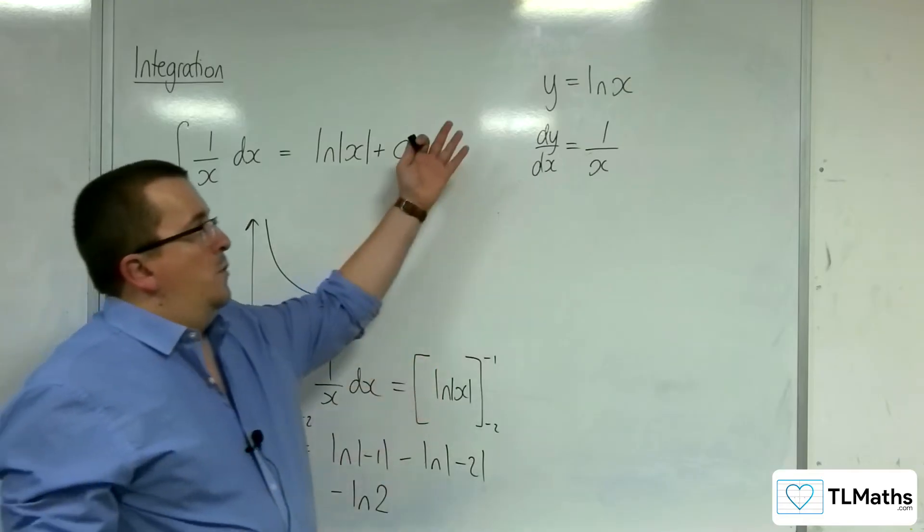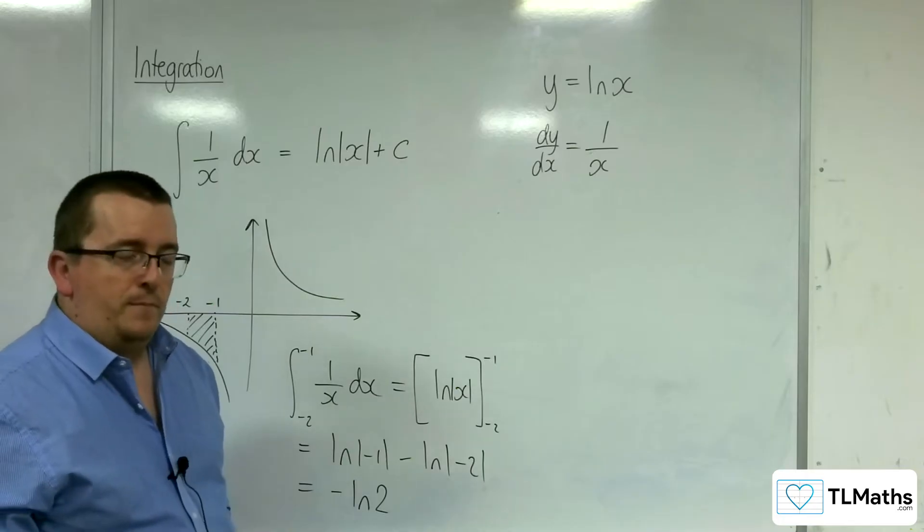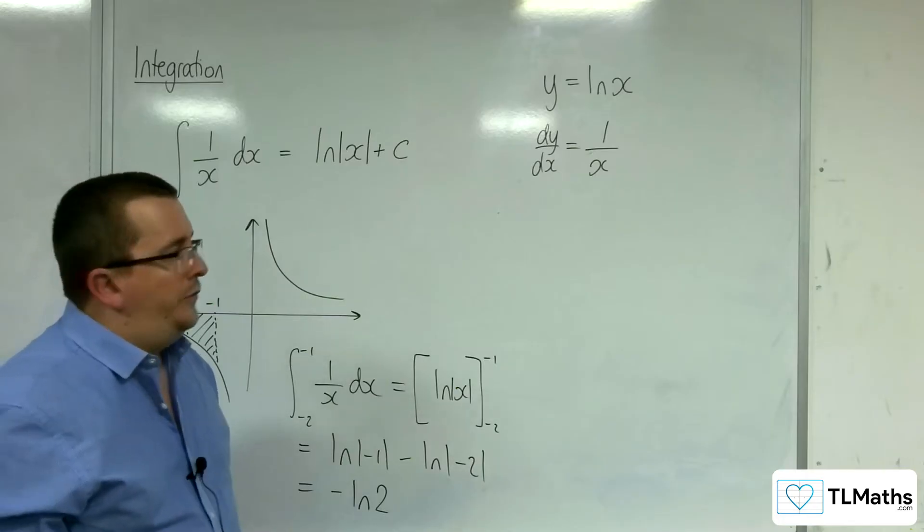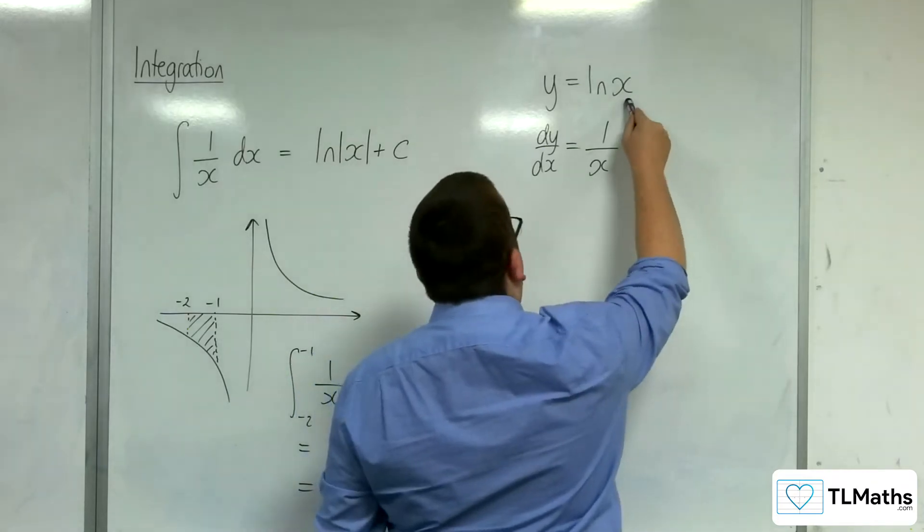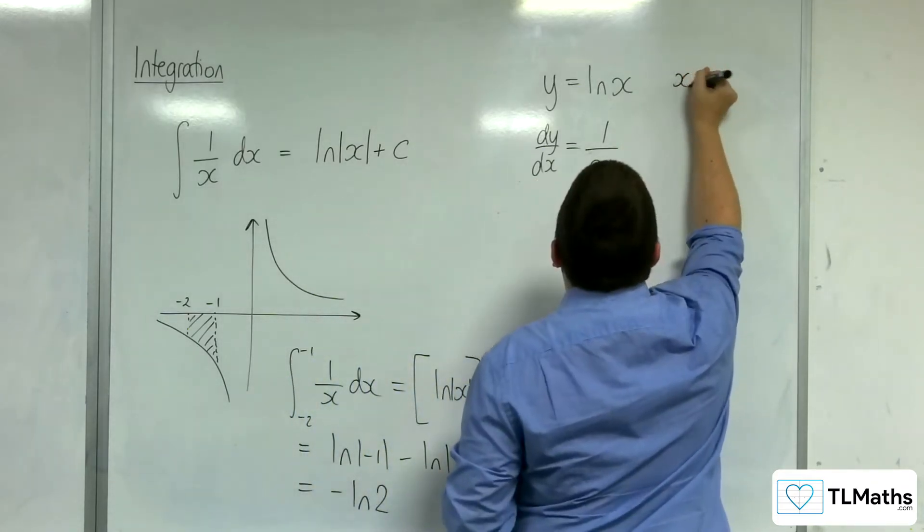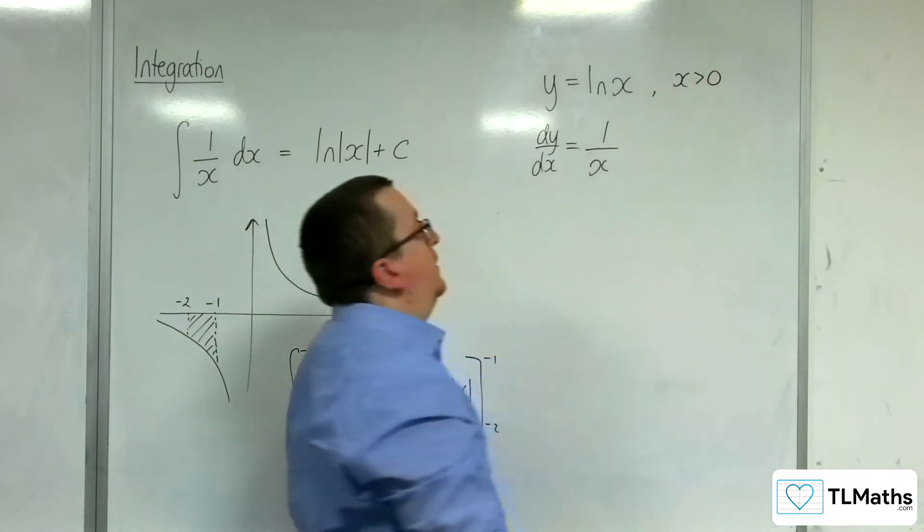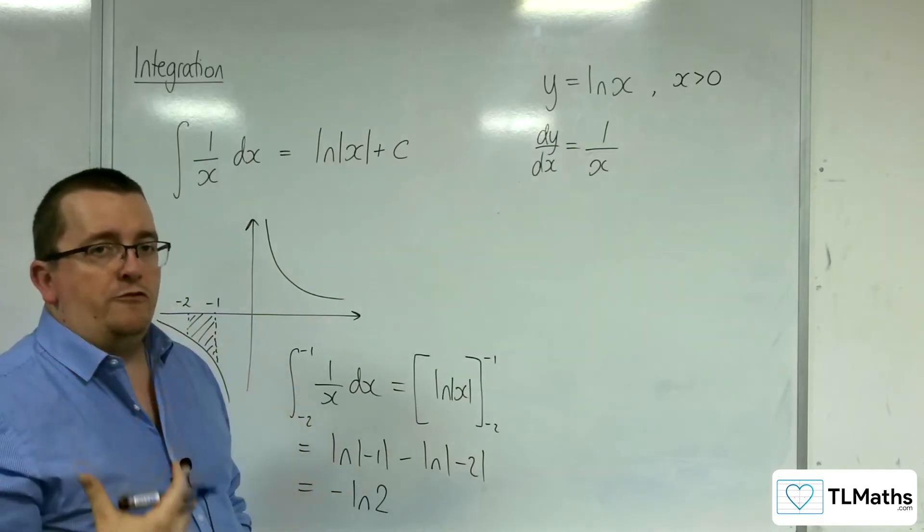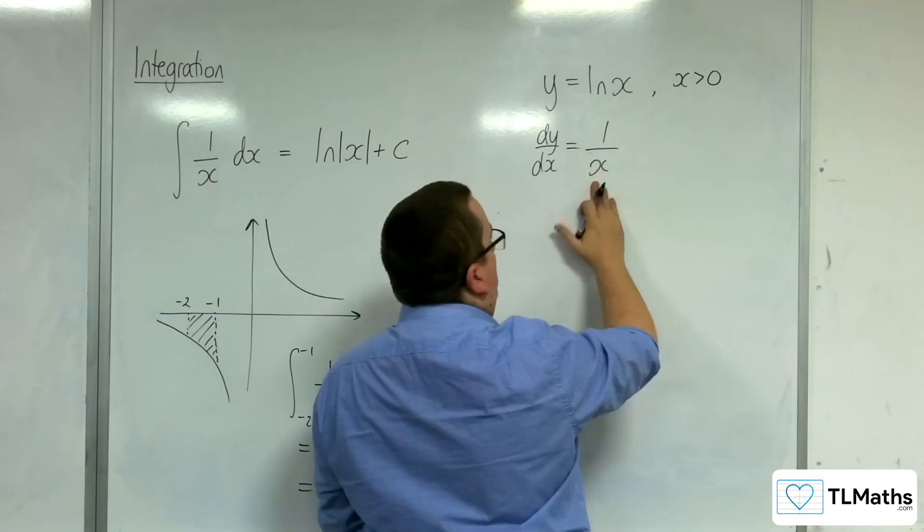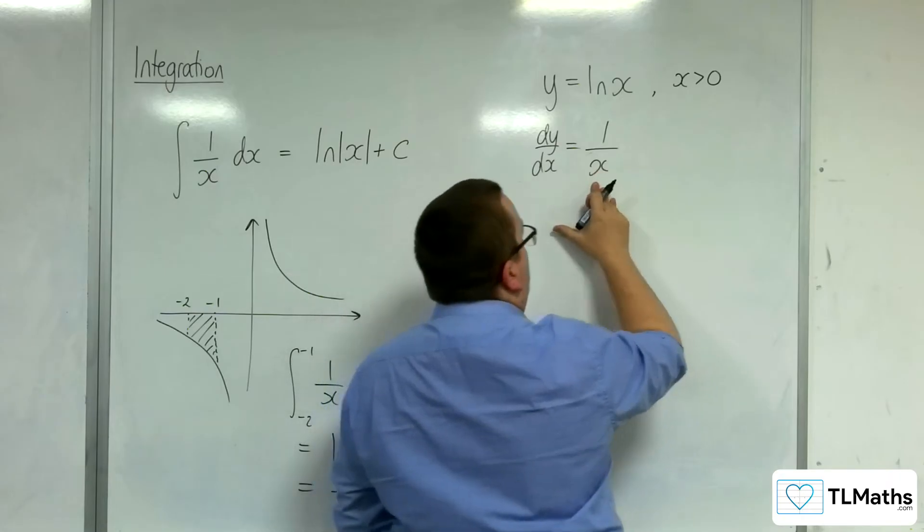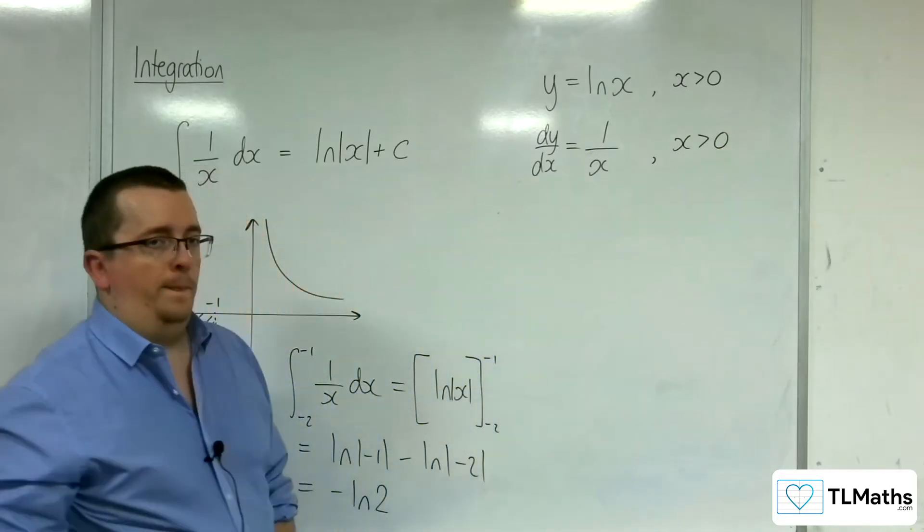The only problem with writing that down is that it's only really half right. Because y equals the natural logarithm of x only exists for x greater than 0. This is the domain of ln of x. So when ln of x gets differentiated to 1 over x, this is true. It is 1 over x is the gradient function, but only for x being greater than 0.